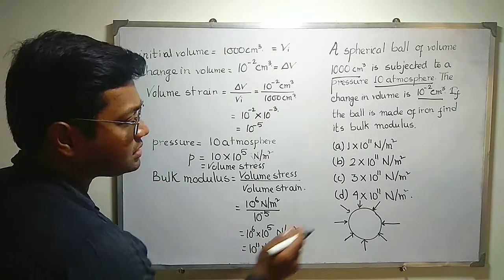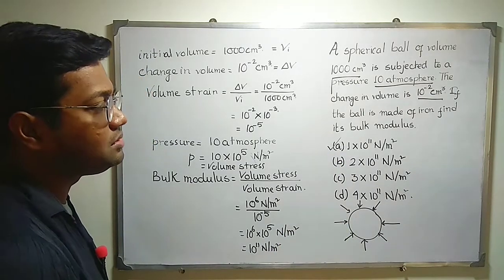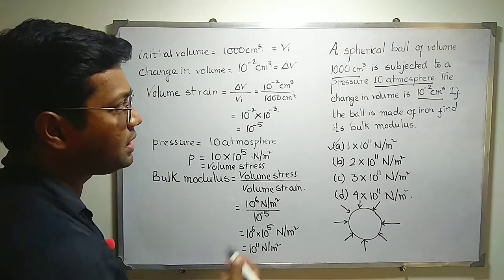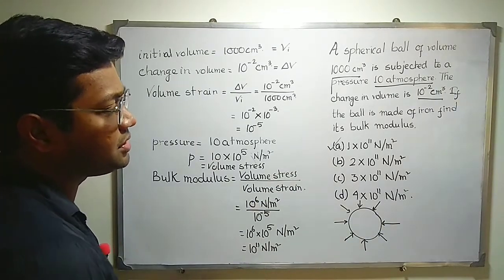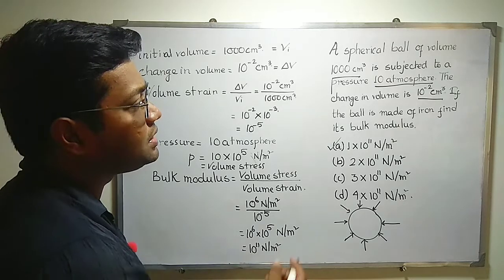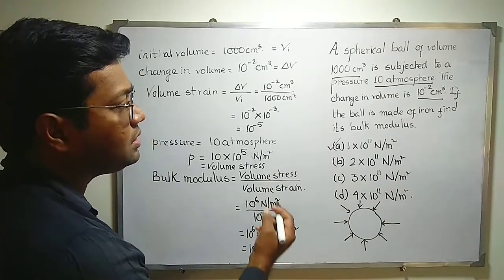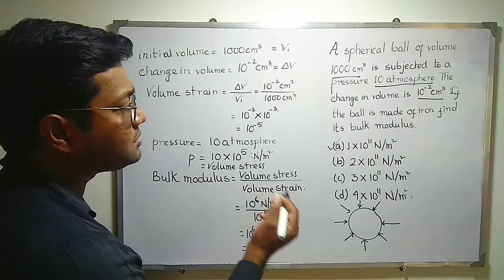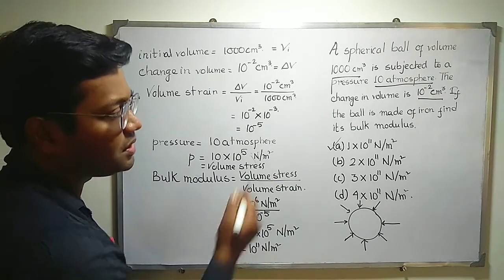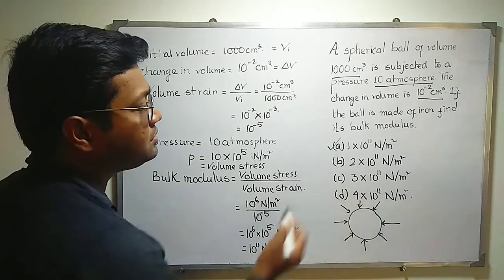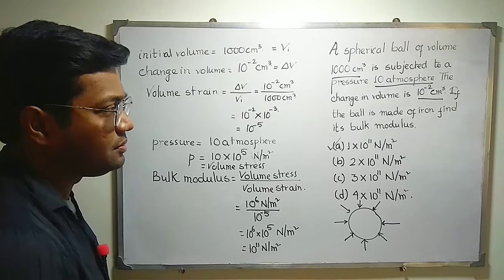According to this, option A is the correct answer: 1×10¹¹ N/m². That means a spherical ball of volume 1000 cm³ subjected to a pressure of 10 atmosphere with a change in volume of 10⁻² cm³, made up of iron, has a bulk modulus of 1×10¹¹ N/m². Thank you all.